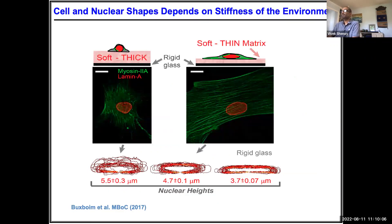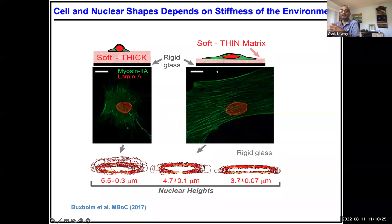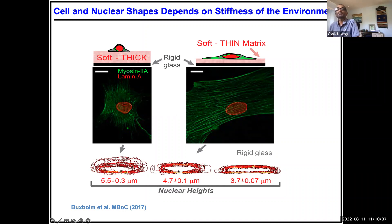I'm going to start by looking at standard material from Dennis Discher's lab. If you place a mesenchymal stem cell on a hydrogel that's thick versus thin, with the same ligand presentation on the surface, the cells are seeing different stiffness with everything else being the same. What happens is that cells on stiff substrates are much more spread and elongated, with actin stress fibers, and the nucleus is also quite deformed.